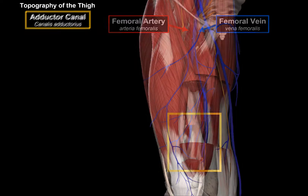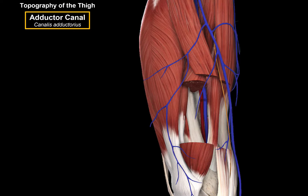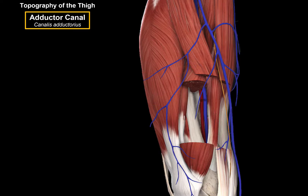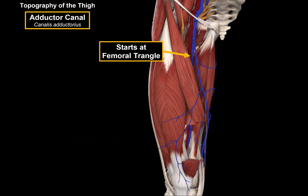To better visualize the canal, I've cut a window through two of the muscles on the anterior compartment of the thigh. The first is the sartorius muscle, which forms the roof of the adductor canal, meaning structures within this space lie deep to the sartorius. I've also cut through the vastus medialis, one of the large quadriceps muscles on the medial aspect of the knee. Dorsally to this canal, you'll see the adductor magnus. The adductor canal starts at the apex of the femoral triangle and ends at the popliteal fossa.